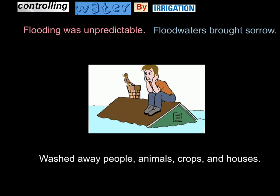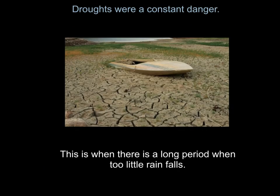Though flooding brought the silt for excellent soil, it also did bad things like destroying pretty much your life. Another problem in Mesopotamia are long-lasting droughts — droughts are a constant danger. A drought is when there is a long period when too little rain falls. So you can either have horrible floods that wash away your stuff, or you have droughts where you don't have enough water to grow your crops. Both are very dangerous.